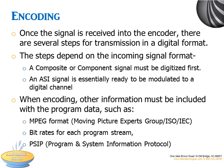Once a signal is received at the encoder, there are several steps for transmission in a digital format. The steps depend on the type of incoming signal. A composite or component signal is in an analog form, so it must be digitized first. An ASI signal is essentially ready to be modulated to a digital channel.